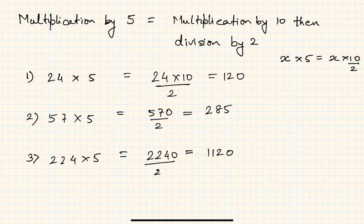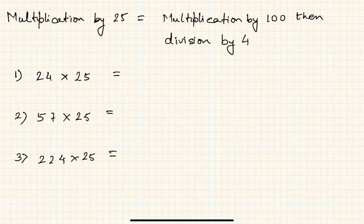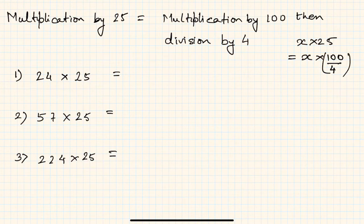Now let us understand the process of multiplication by 25. If you have to multiply a number x by 25, this is nothing but x into 100 by 4, because 25 is 100 upon 4. So this technique we will be applying to multiply numbers by 25. First step is to multiply it by 100 and then divide by 4. Let us take 24 into 25 as the first example. So it is nothing but 2400 by 4, which is clearly 600, because 24 by 4 is 6.